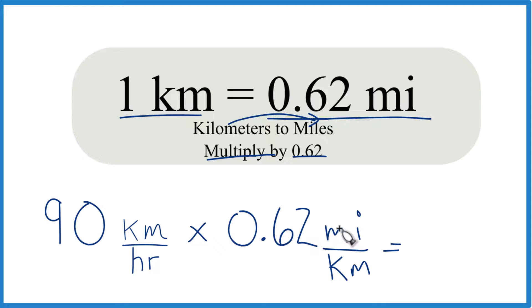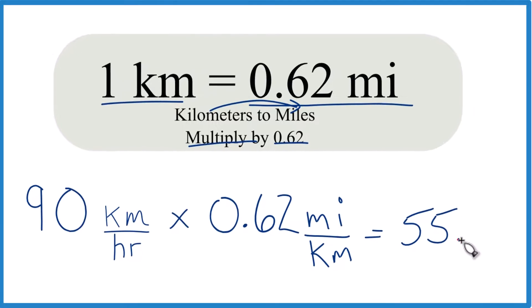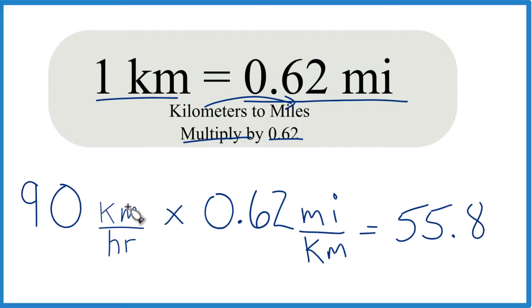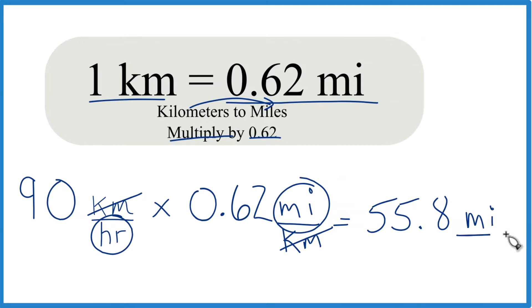So 90 times 0.62 is 55.8, and it's miles per hour because kilometers here and here cancel out, left with miles per hour. That's what we're looking for, miles per hour. So that's how you convert 90 kilometers per hour to miles per hour.